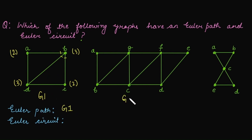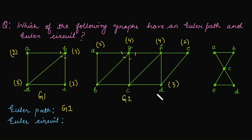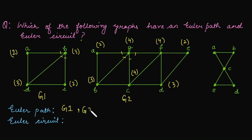For graph G2: degree of vertex A is 2, degree of vertex D is 4, degree of vertex F is 4, degree of vertex E is 2, degree of vertex D is 3 — an odd degree vertex, so G2 has no Euler circuit. Degree of vertex C is 4 and degree of vertex B is 3. Exactly two vertices have odd degree, so G2 has an Euler path.